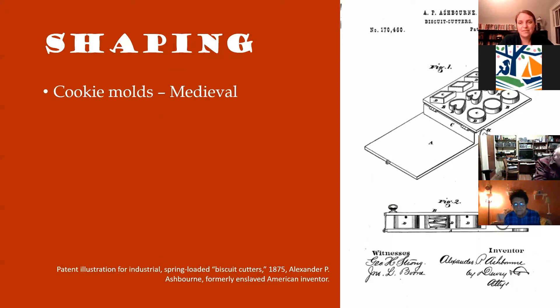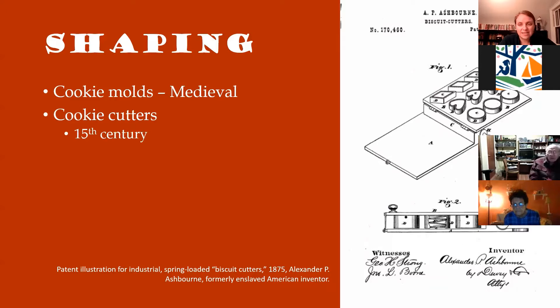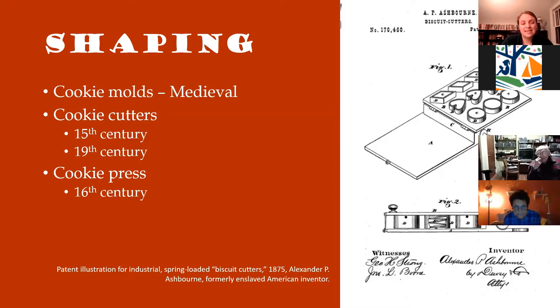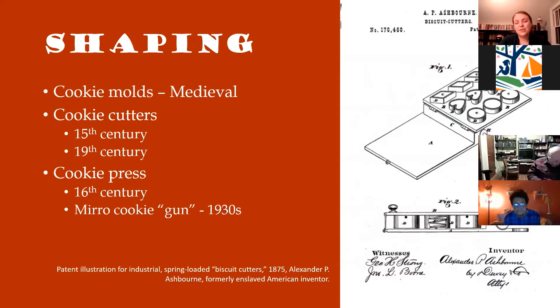Shaping the cookies: cookie molds are very medieval. Cookie cutters date back to the 15th century, but they're really not in widespread use until the 19th century, because tin becomes much more affordable and is much easier to use and less expensive than things like pewter or silver, which would have been some of the early cutters. And then there's also the cookie press. We'll be talking about spritz in a little bit — that's a very popular cookie that requires a cookie press. There is evidence that similar presses existed dating back to the 16th century, but spritz really takes off after World War II, thanks in large part to the Mirro Aluminum Company developing a cookie gun in the 1930s, which is probably the cookie press we're all familiar with today.